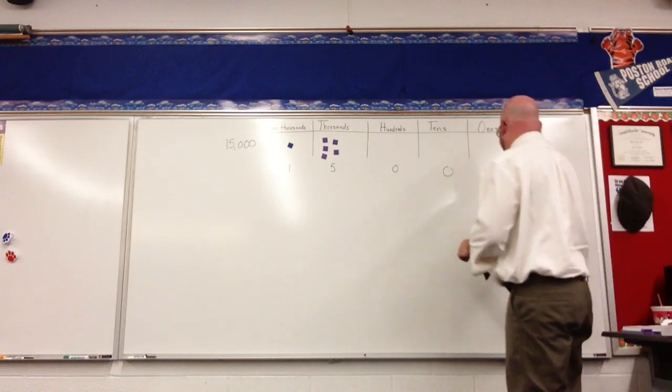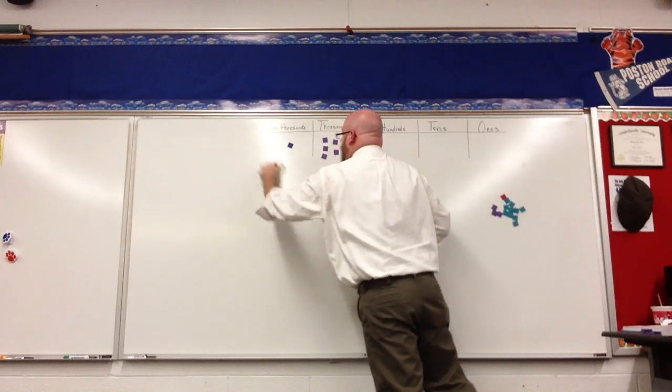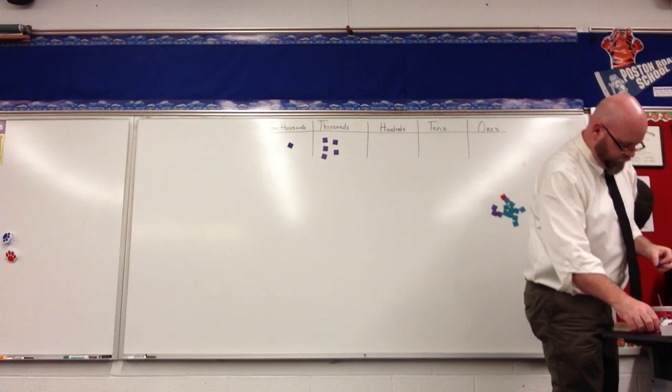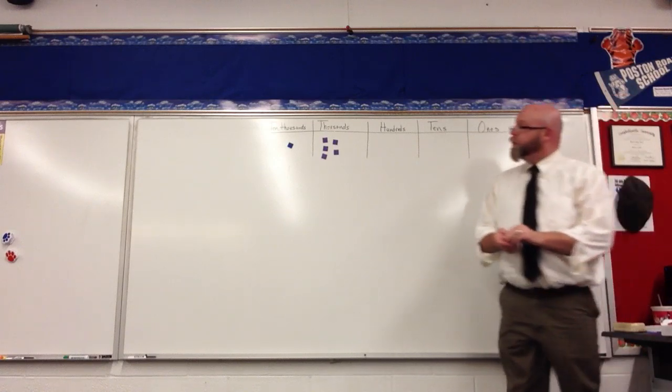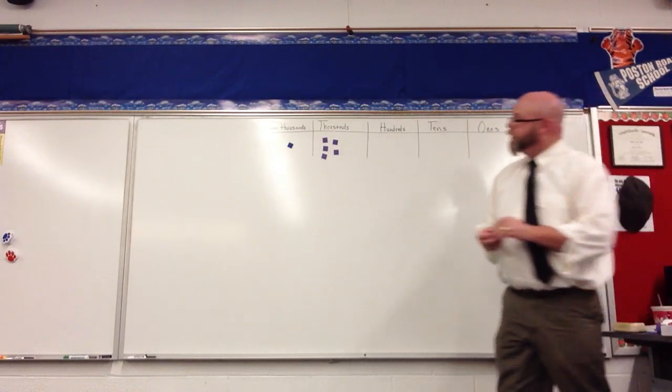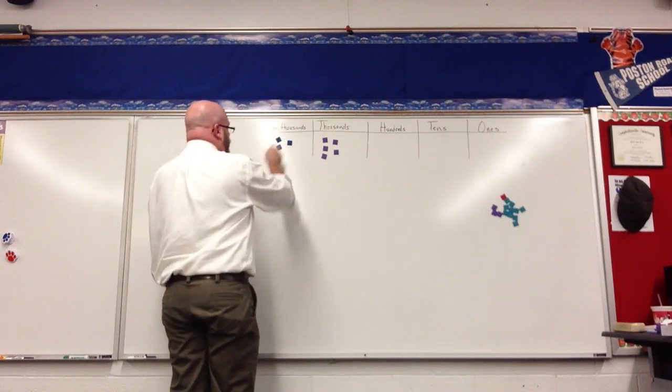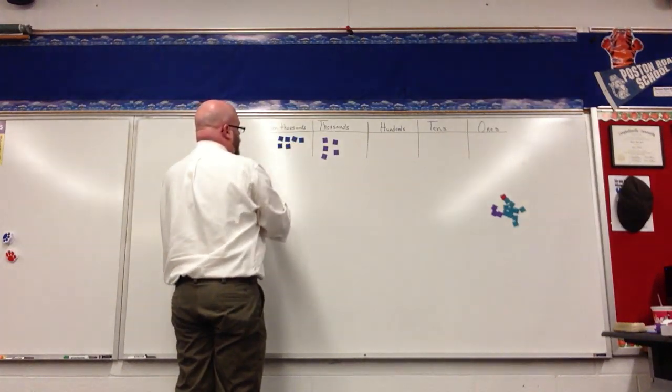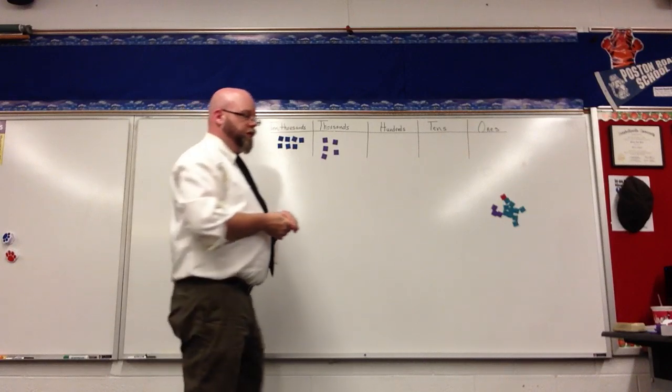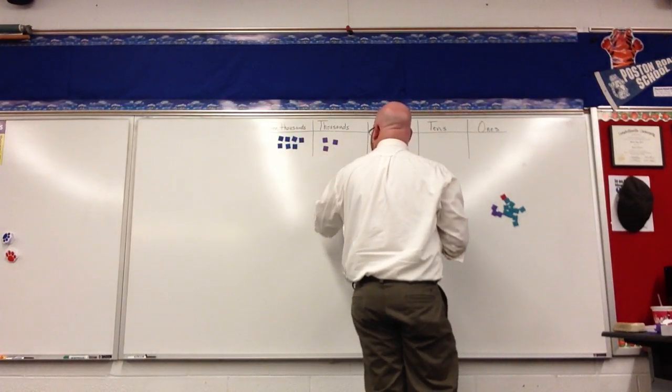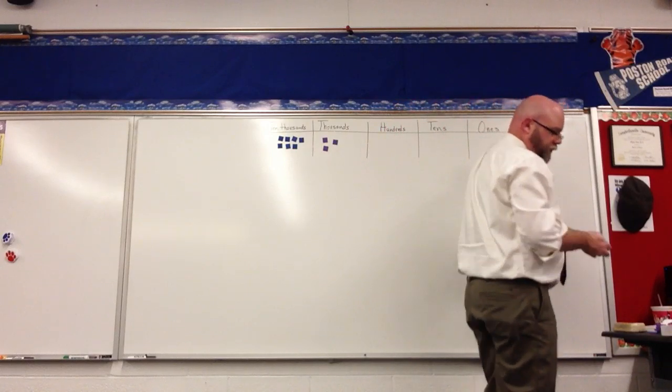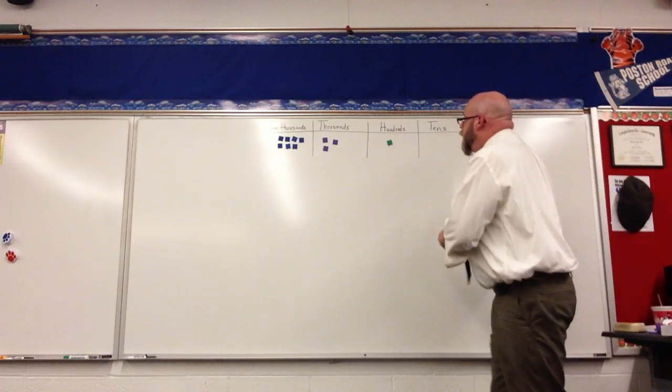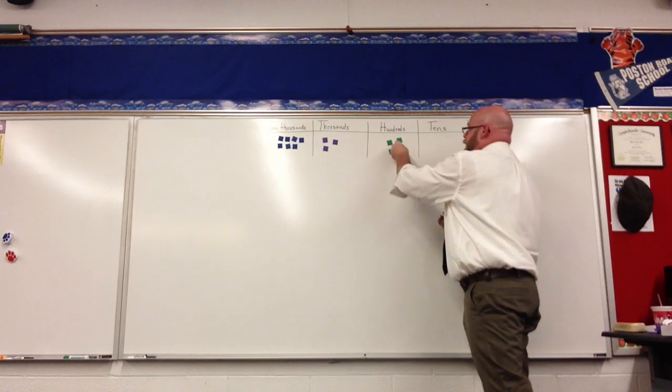Let's look at another one. Let's say I have seven, three, four, five, six, seven, in the ten thousandth place. I have 3 in the thousands place, 4 in the hundreds place.